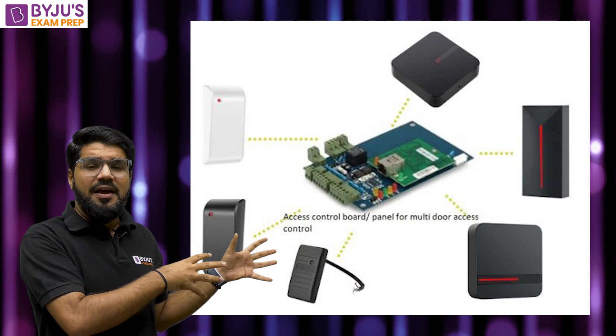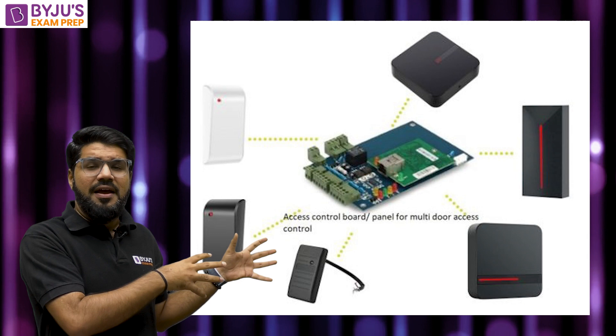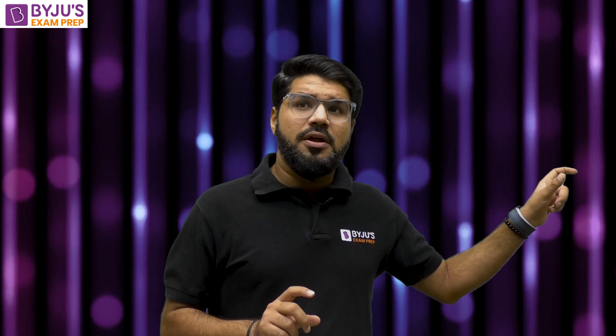The reader receives this backscatter and sends the data to its control panel and database for interpretation. The control panel is the brain of the entire RFID system — it verifies whether the data received from the chip is authentic or not. As I showed earlier, when I take my tag to my allocated room it gets activated because the control panel authenticates it. If I take the same tag to another room not allocated to me, it does not open. The control panel handles the verification: if valid, the door opens; otherwise it doesn't.